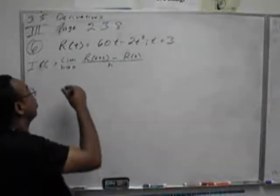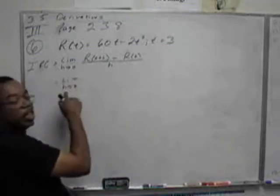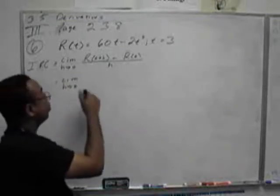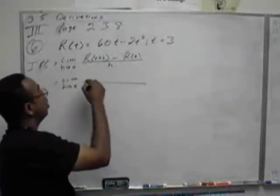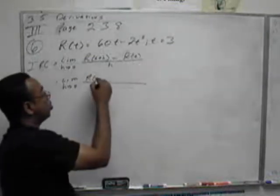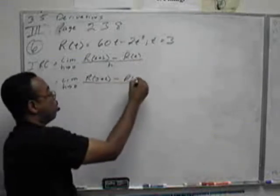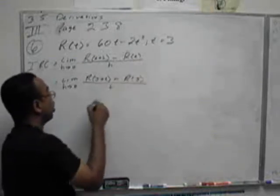So here we go. The limit as h goes to zero of r of 3 plus h minus r of 3, all over h.